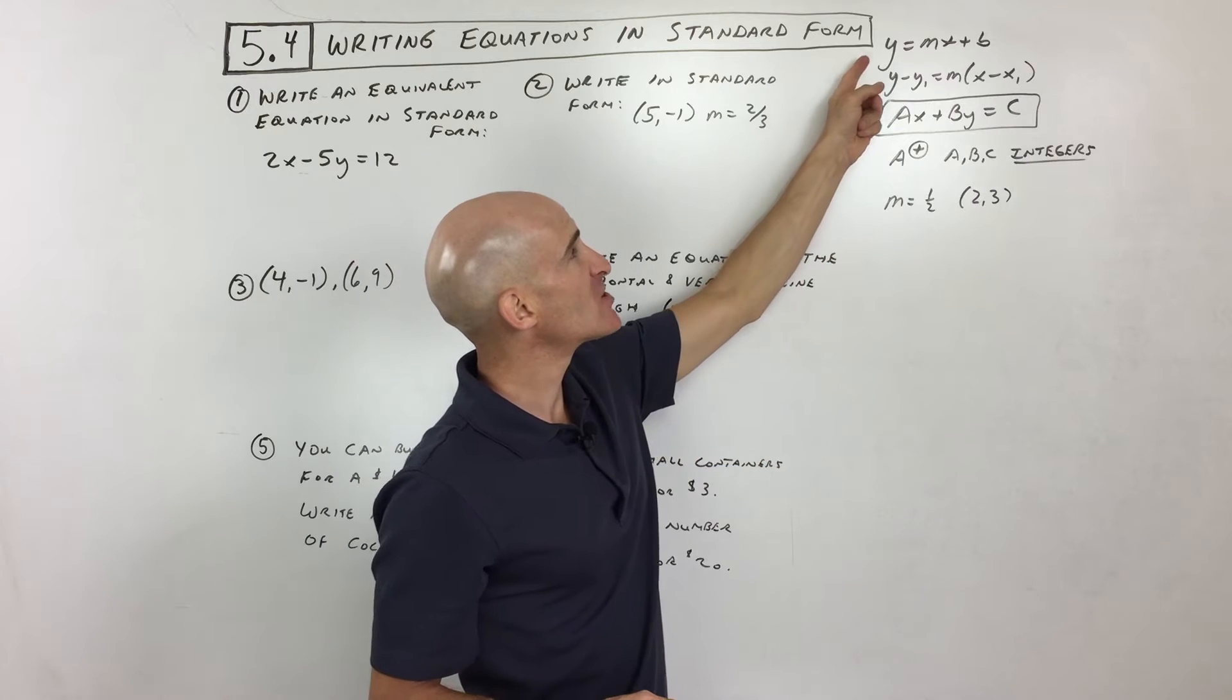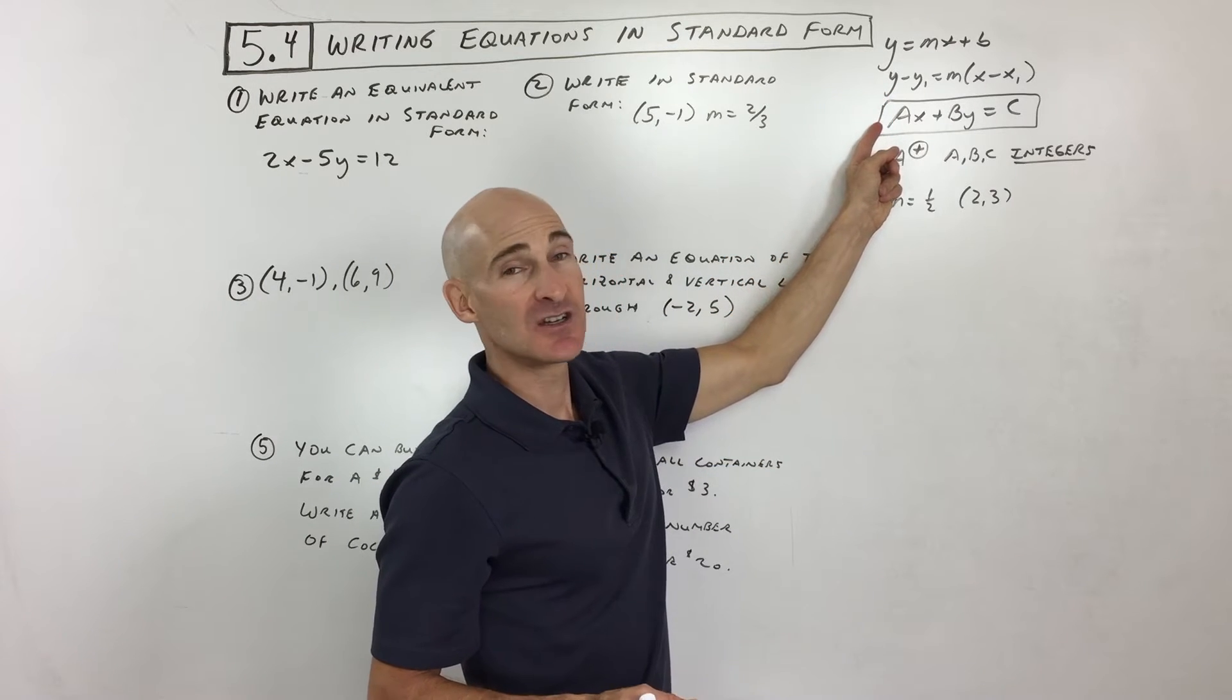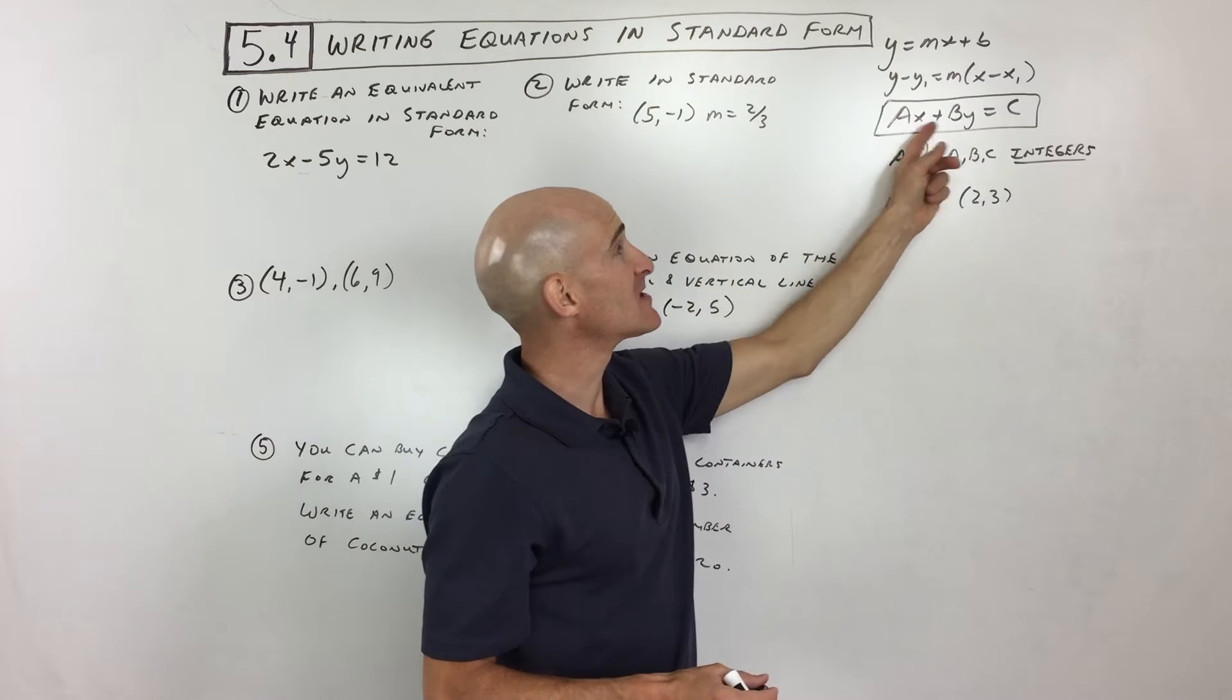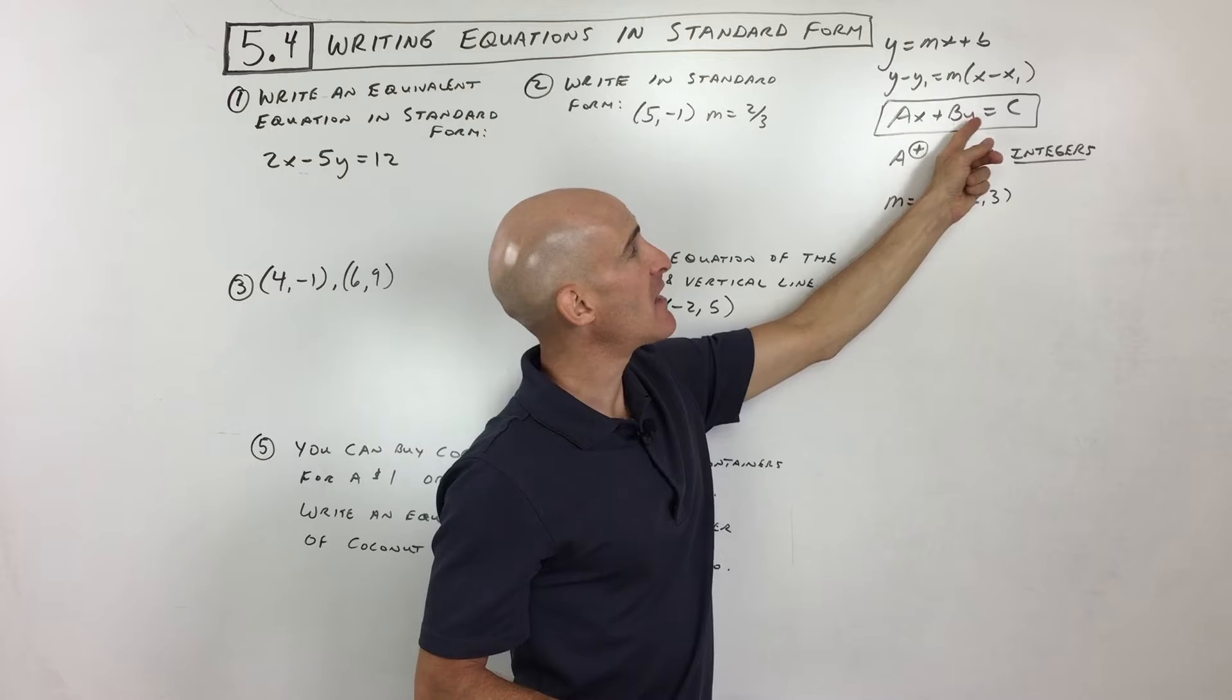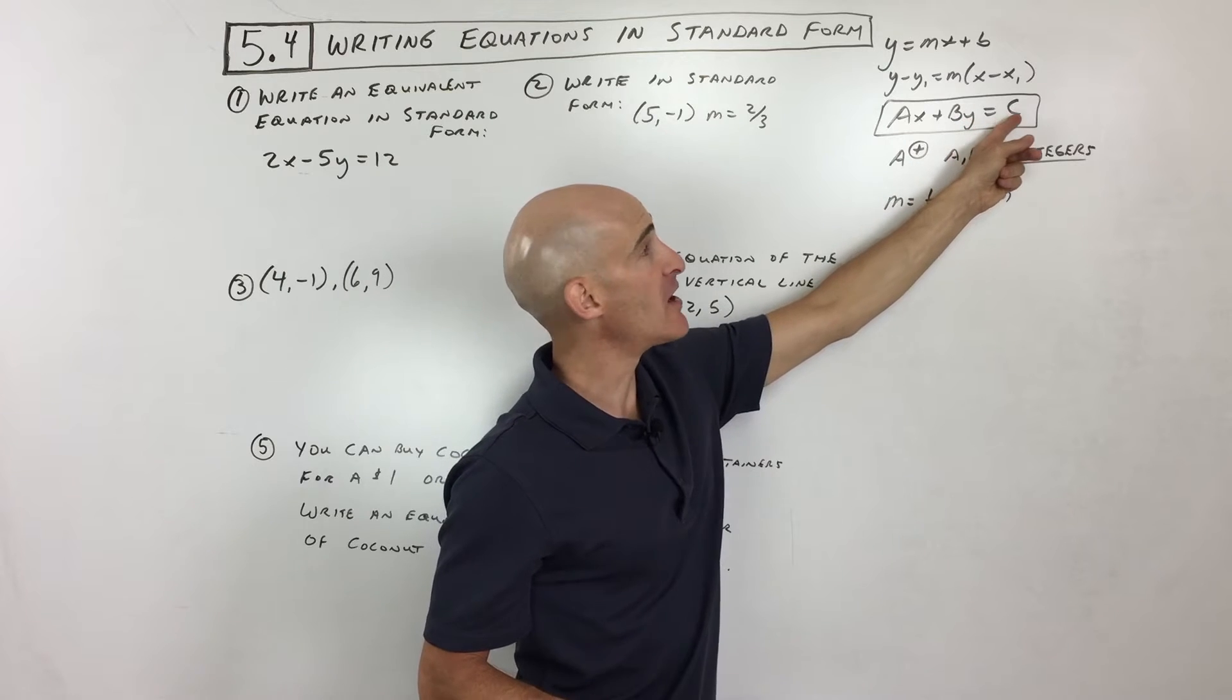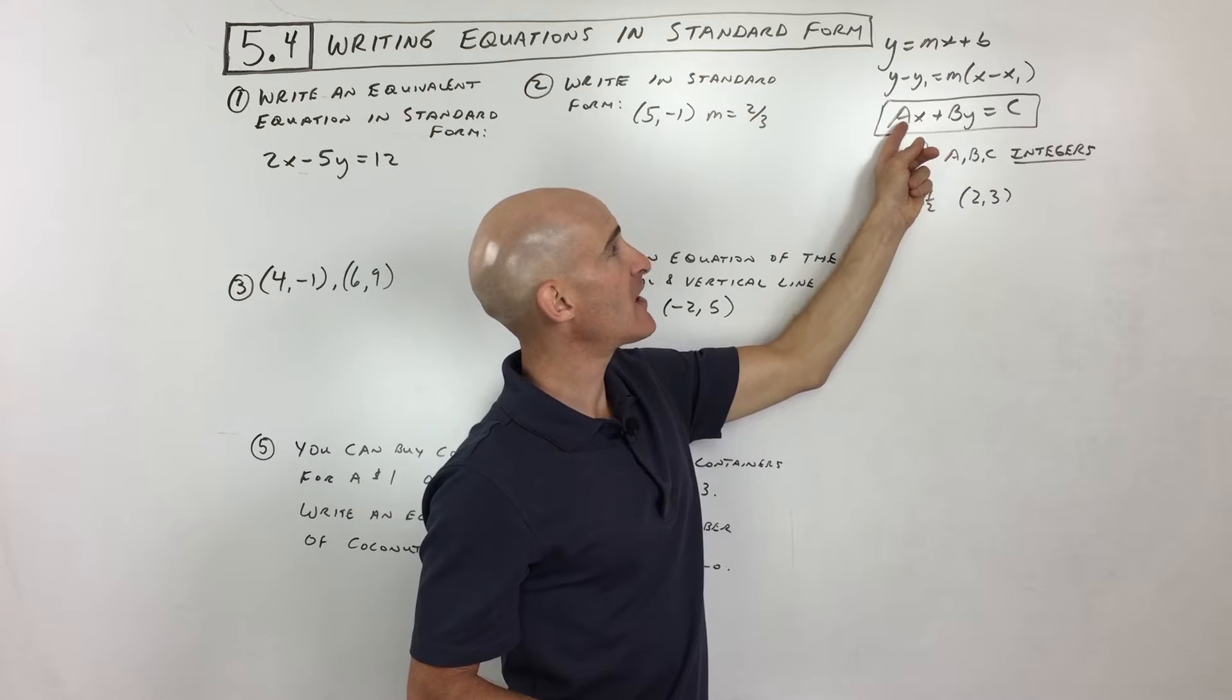Now just a quick note, generally we start with the slope-intercept or the point-slope form, and then we rearrange it and put it into the standard form. Now the key to putting it into the standard form is, you want the variables on the left side of the equal sign, and the number on the right, and then you want the a value, this coefficient in front of the x,